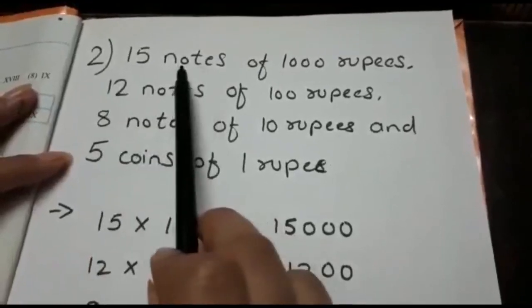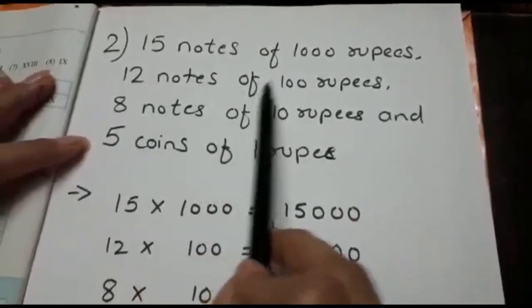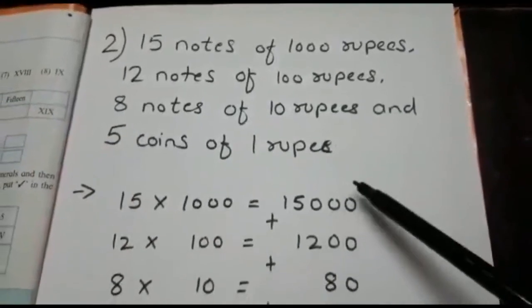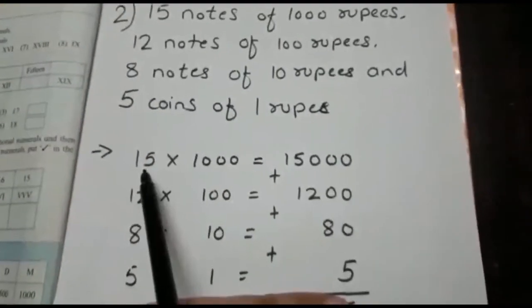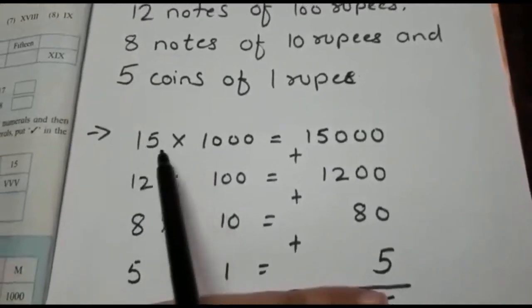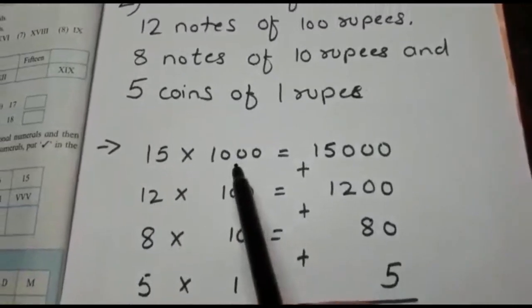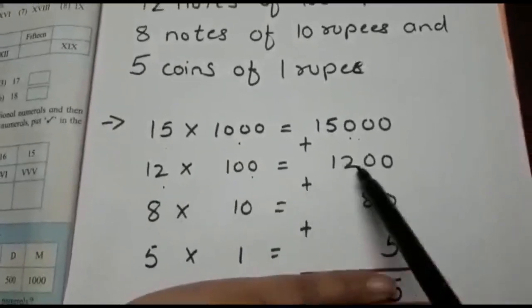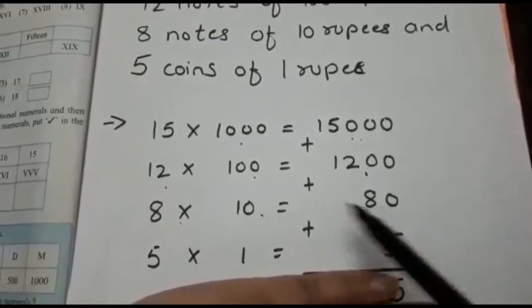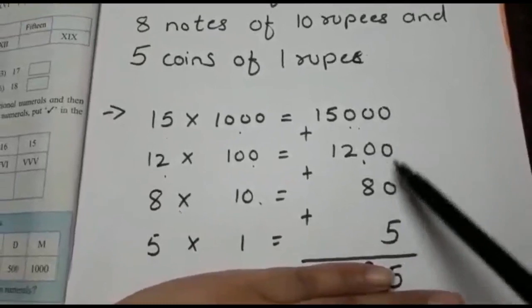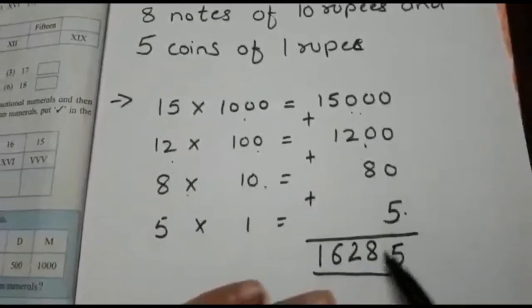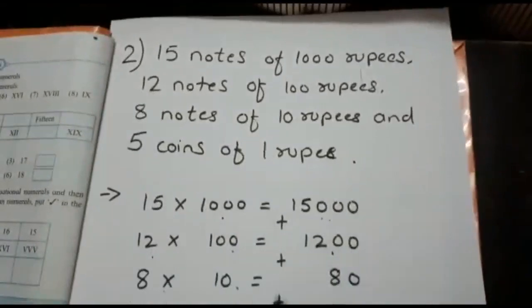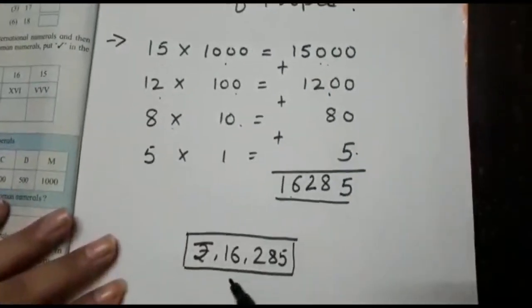Now let's see the second sum: 15 notes of 1,000 rupees, 12 notes of 100 rupees, 8 notes of 10 rupees, and 5 coins of 1 rupee. I have kept prepared this multiplication form. Just as I have explained you in first sum, we have to multiply the number of notes with the value of notes. 15 × 1,000 = 15,000, 12 × 100 = 1,200, 8 × 10 = 80, 5 × 1 = 5. When we sum up these values, we get the total 16,285. The total value of these notes is rupees 16,285.